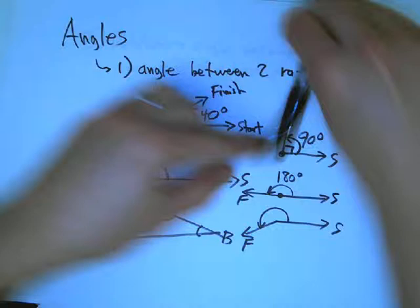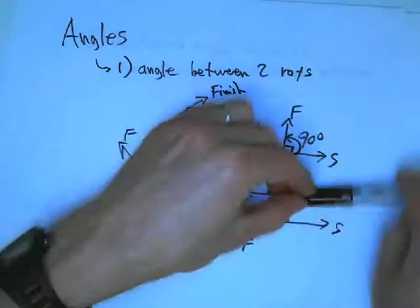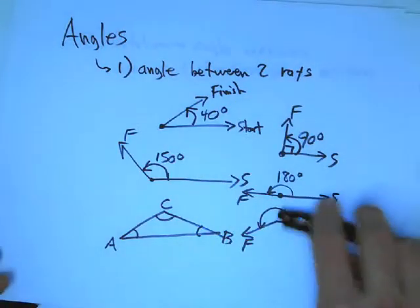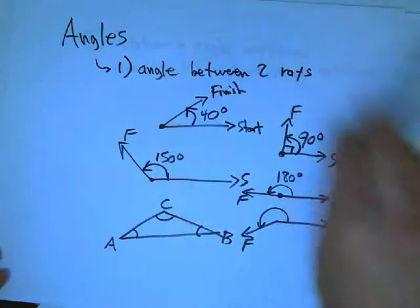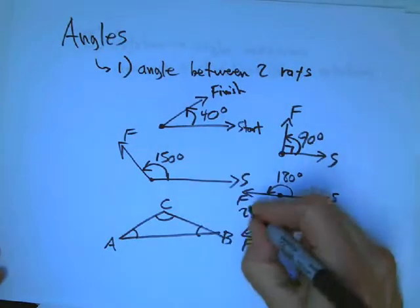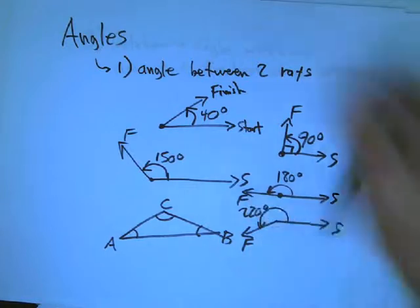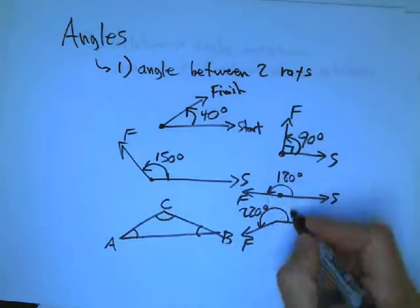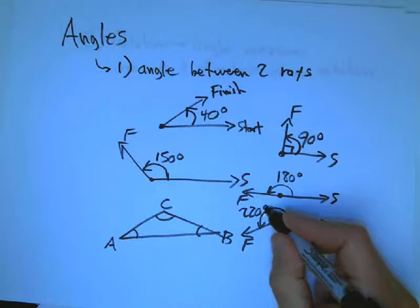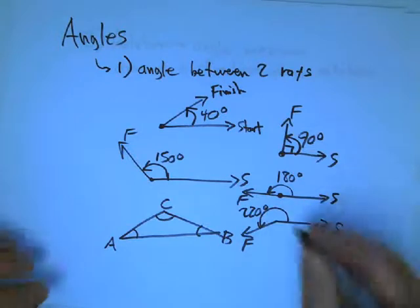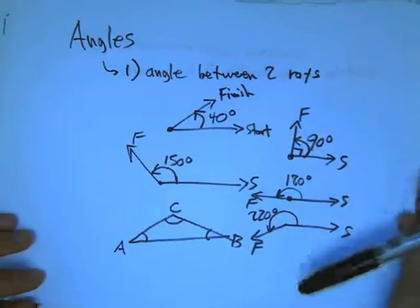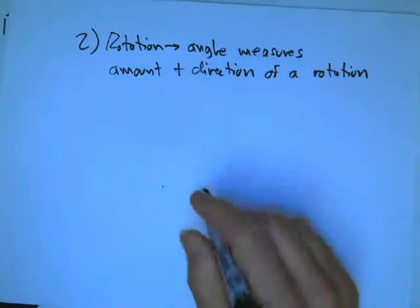This is a counterclockwise rotation by 90, by 150, by 180. And then it totally makes sense to say, yeah, I'm going to rotate by more than that, maybe like by 220 degrees. So that's, if that's the start and that's the finish, that's a counterclockwise rotation by 220 degrees. And we can go as far as we want with that.